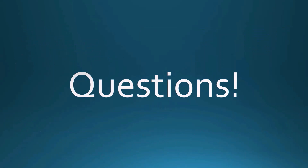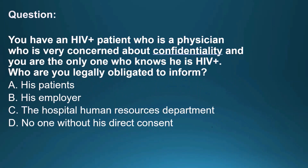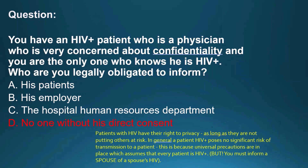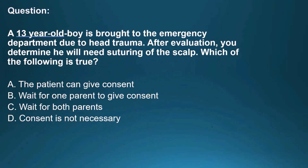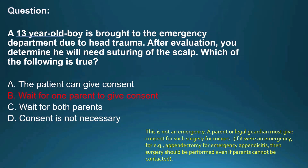Case questions. First: You have an HIV-positive physician patient concerned about confidentiality — who are you legally obligated to inform? No one without his direct consent. HIV-positive patients pose no significant risk to other patients. But if he has a spouse and is not telling that spouse, you must inform the spouse because they are at risk. Second: A 13-year-old needs scalp suturing after head trauma — what is true? Wait for one parent to give consent, since this is not an emergency. A parent or legal guardian must give consent for non-emergency procedures on minors; however, in a true emergency you would proceed even if parents cannot be contacted.